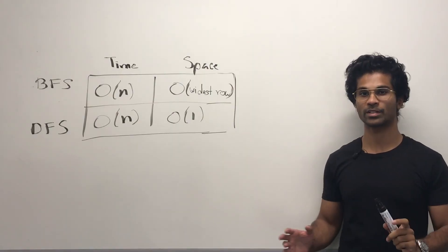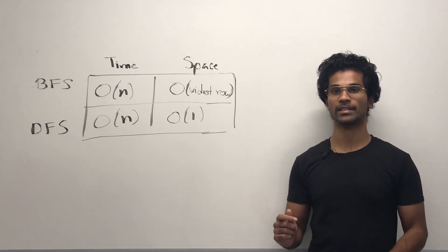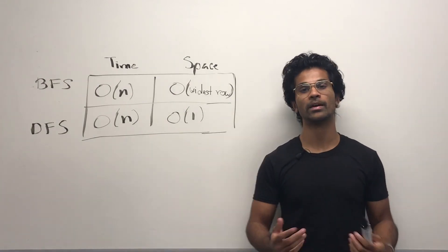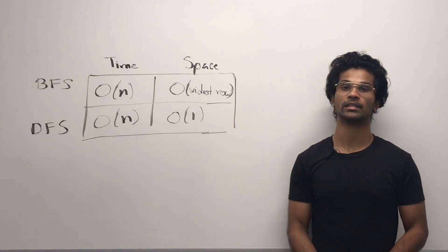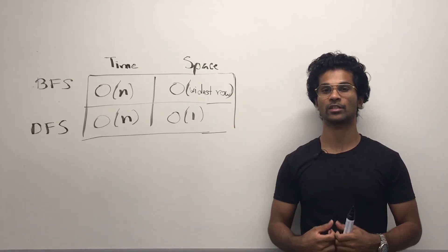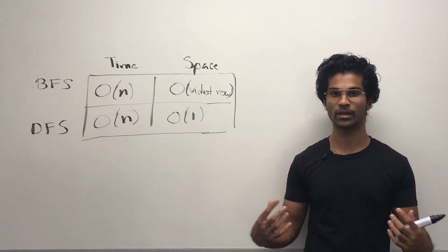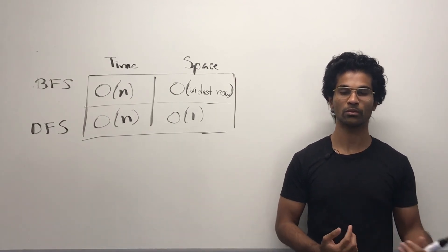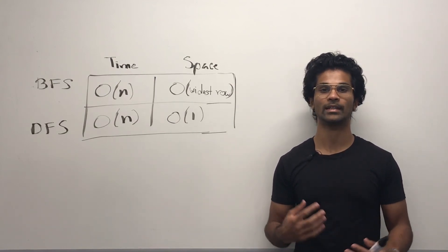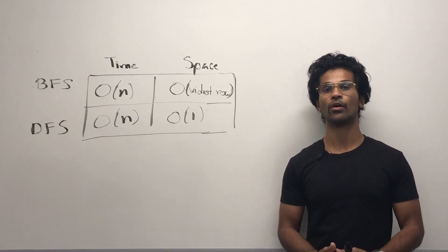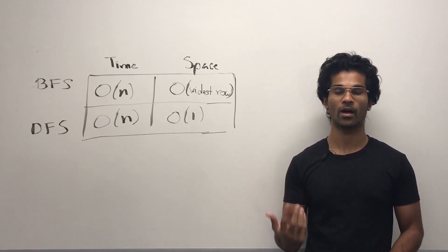Here's the time and space complexity. For both BFS and DFS, the worst case time complexity is going to be O(N), because we might have to visit every single node. For space complexity, BFS is going to have a space complexity equal to the widest row in the tree, because we'll be storing it in the queue. For DFS, it's O(1) since we're not using any additional data structures — although if you consider stack space, then it's not constant.